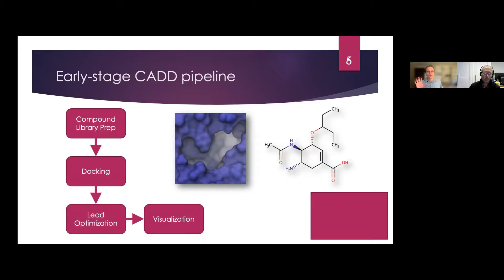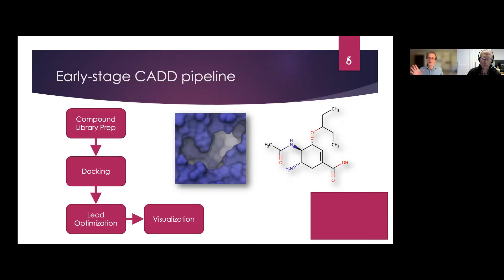I thought it would be helpful to give a brief framework of an early-stage computer-aided drug discovery pipeline. This is a very simplified workflow — many steps are left out — but it's useful to plug these tools into this framework. To start, you have a library or database of many small molecules. Often these molecules are stored in the most compressed format possible because you might have millions of them, and the information often lacks any indication of three-dimensional structure.